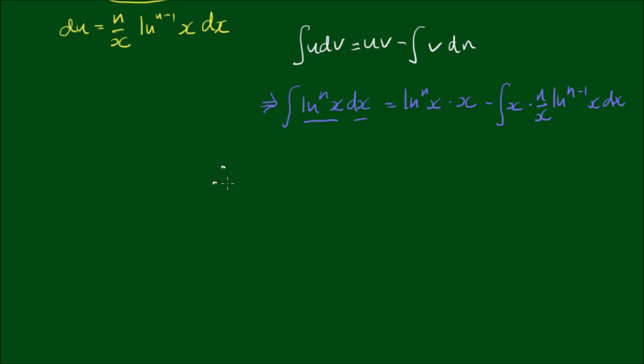So the integral of ln to the nth power of x with respect to x is equal to x log of the nth power of x minus, these x's can cancel, the n can come out the front by the integral of log to the n minus 1 power of x dx.